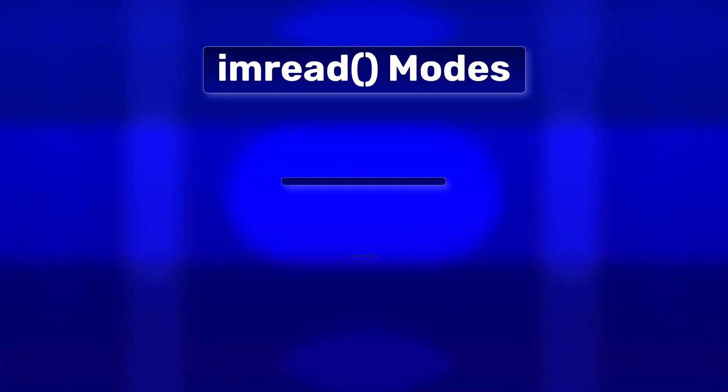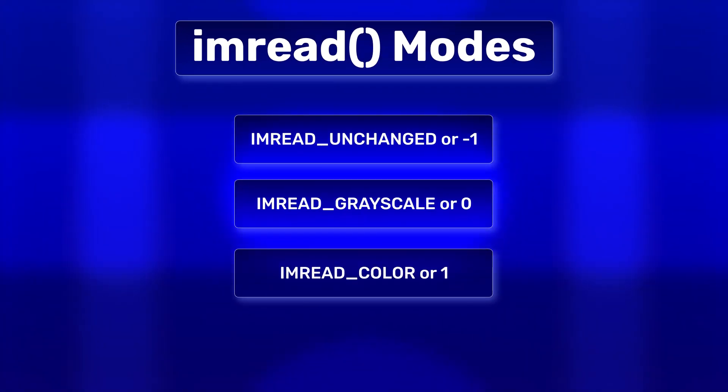To read the image, we have the function imRead. Its first argument is a relative or absolute path to the image, and the second argument is an optional flag which specifies how the image should be represented. 0 is for grayscale, and 1 or minus 1 is for colored images. Minus 1 also reads the alpha channel, while 1 is the default flag. These three are the most commonly used flags, but OpenCV also includes more.